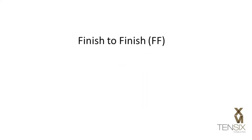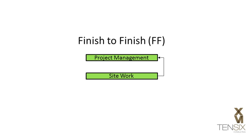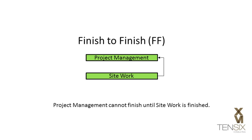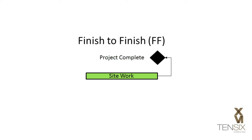Finish to Finish is used to describe a finishing dependency between tasks — one activity cannot finish until another activity finishes. In this example, project management cannot finish until the site work is finished. This relationship is commonly used with finish milestones.